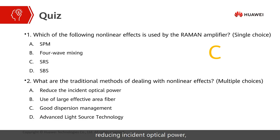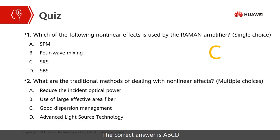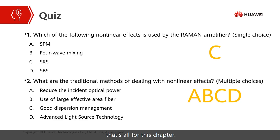Reducing incident optical power, using fibers with large effective area, good dispersion management, and advanced light source technologies — all of these can cope with non-linear effects. So the correct answer is A, B, C, D. That's all for this chapter. Thank you.